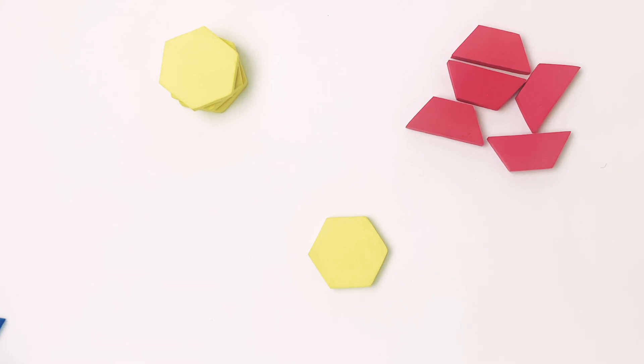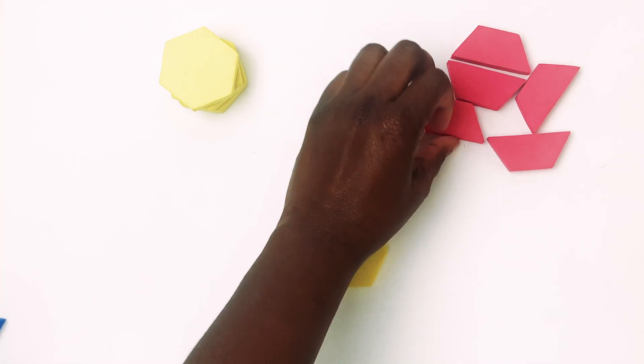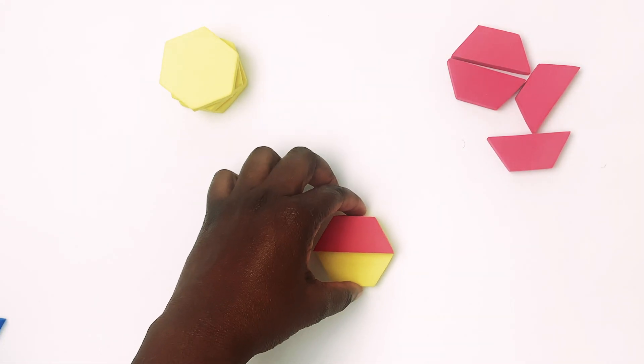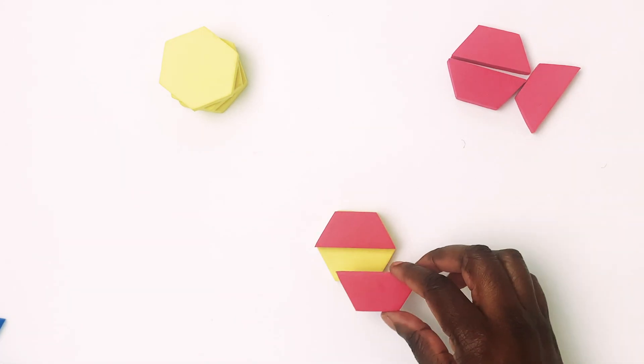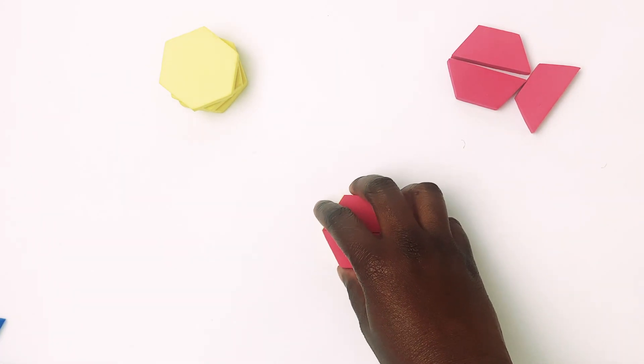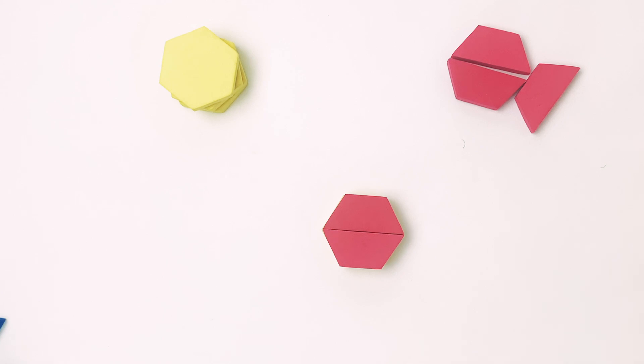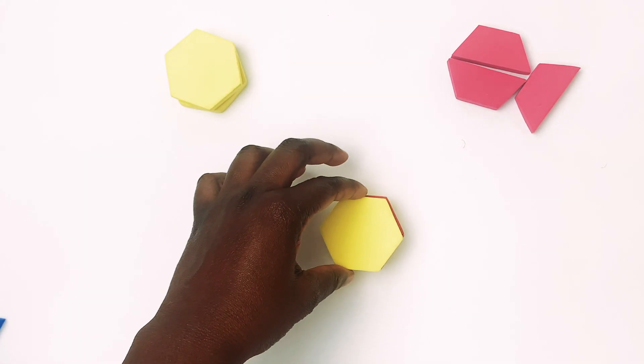Now, let's see how many trapezoids we can use to create a hexagon. So I have one, and I'm going to flip and turn, and I have two. So, two trapezoids create a hexagon.